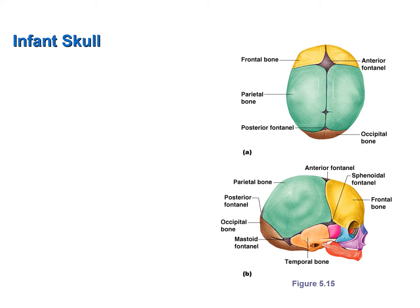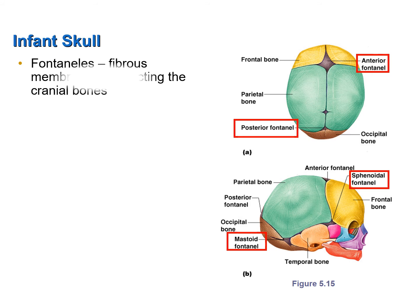I would now like to talk about a particular feature of the infant skull. At birth, the cranial bones of the infant skull are not completely fused — there are spaces between them, and these spaces are covered with a fibrous membrane connecting one cranial bone to another. These are called fontanelles. Fontanelle means fountain, reflecting the fact that if you look closely at a fontanelle, you can actually see blood pulsing through the blood vessels, which looks somewhat like a fountain.